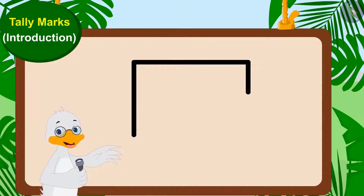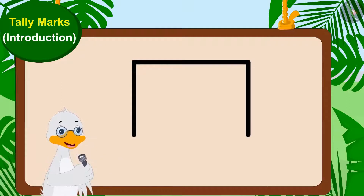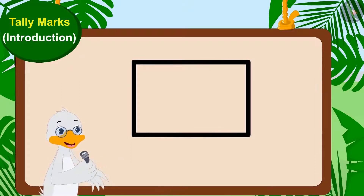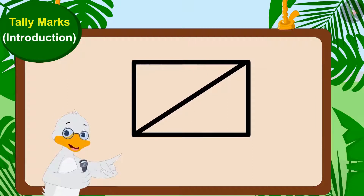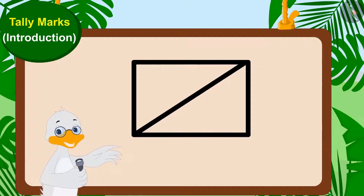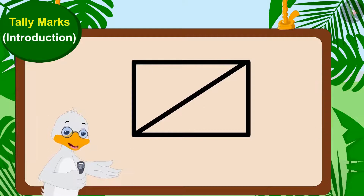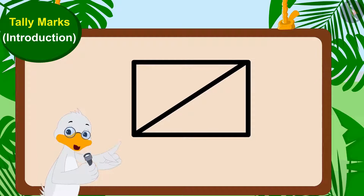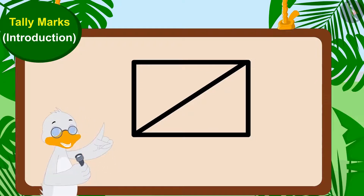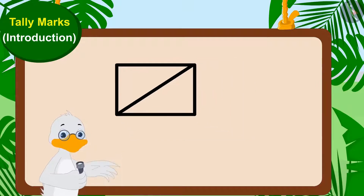For the third vote, a vertical line like this. And for the fourth vote, once again a horizontal line. And for the fifth vote, we will make a diagonal line, like this, to form a group of tally marks. And then, for further votes, we will repeat this process and make groups of tally marks.